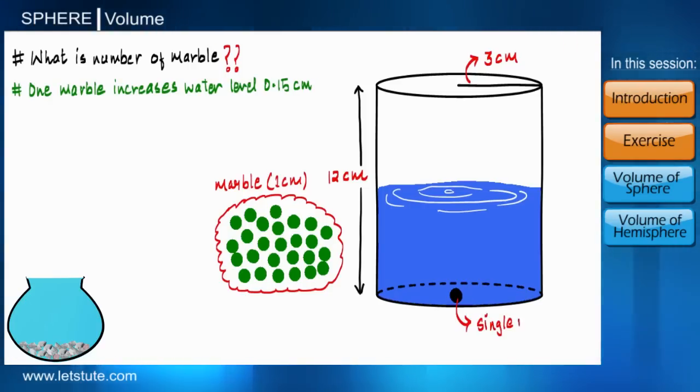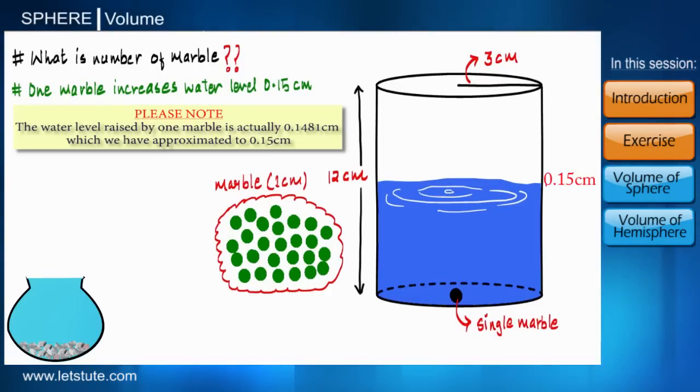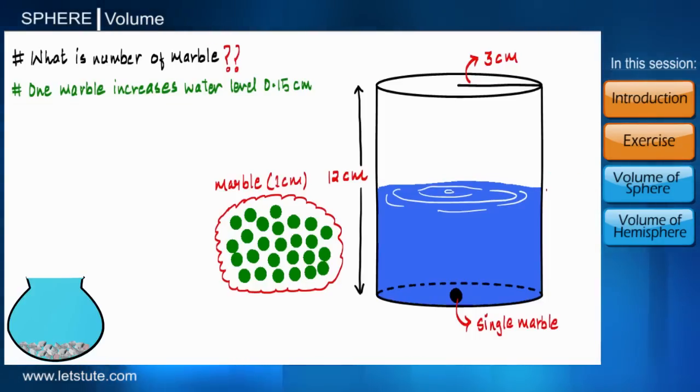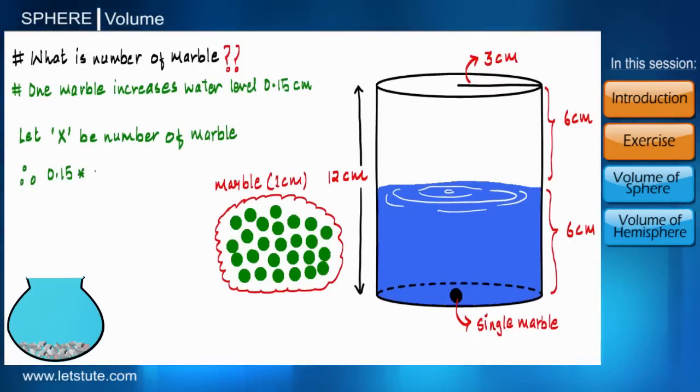For instance, if additional information is given that one marble increases the water level in the glass to a height of 0.15 centimeter, can we now be able to calculate number of marbles required? Let's see how we go about it. Here a glass of 12 centimeter is half filled, it means the water level is already at the height of 6 centimeter and the remaining 6 centimeter has to be filled. So consider we need X number of marbles to raise the water level by 6 centimeter. Therefore 0.15 into X is equal to 6, which implies X equals 40.